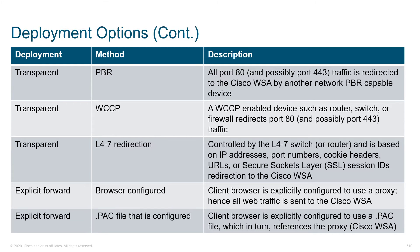When we talk about transparent proxy, what we're doing is steering the user into the WSA and they don't really know anything about that happening — it's out of their control. They could look at all of their settings and options on their computer and it doesn't look like anything special is happening. However, leveraging things like policy-based routing, leveraging things like WCCP, or leveraging layer four through seven redirection support on some switches and routers, we can grab individual traffic flows and redirect them to another device. It's a redirect happening inline by intermediate hardware.